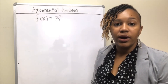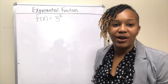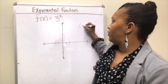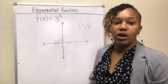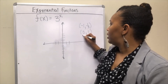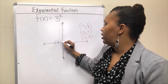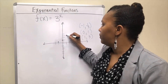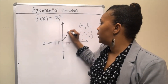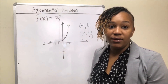Now try this one: graph f(x) = 3^x. Think about the three points always on the graph. The three points would be (−1, 1/3) since the reciprocal of 3 is 1/3, (0, 1), and (1, 3). Since the base 3 is bigger than 1, this is an exponential growth function. Plotting those three points gives you the increasing exponential curve that is the graph of f(x) = 3^x.